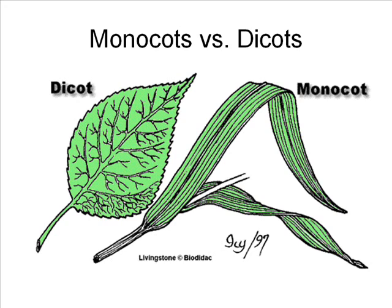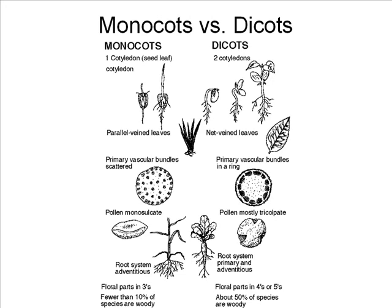In the stems, dicots have their vascular bundles arranged in geometrical rings, whereas monocot vascular bundles are distributed throughout the tissue in no apparent pattern. Other differences include the root structure: dicots have what's called a tap root system, whereas monocots have a more spread-out, smaller system known as fibrous roots.